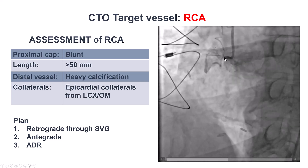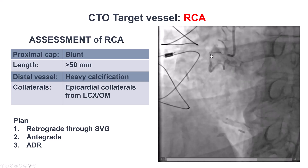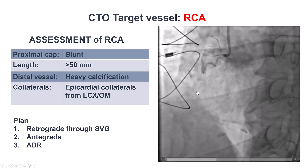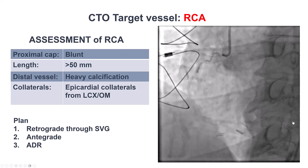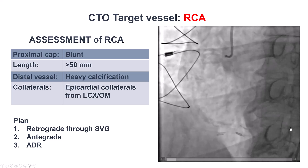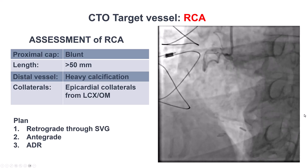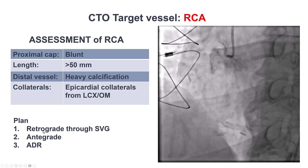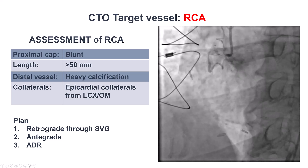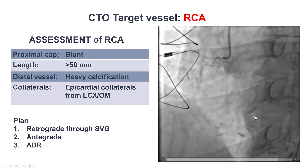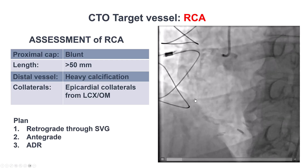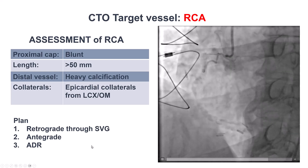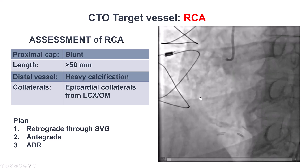This is a very challenging CTO. We have a blunt proximal cap, a long occlusion length with heavy calcification, and the right posterolateral was filling through epicardial collaterals. Our plan was to first try retrograde through the vein graft to the PDA, then try antegrade with antegrade dissection re-entry given the long occlusion length.